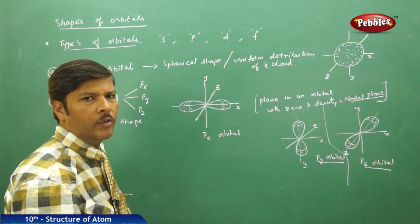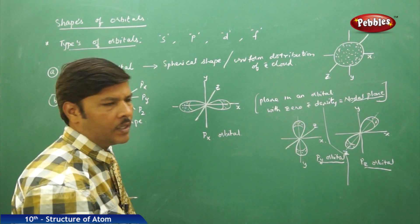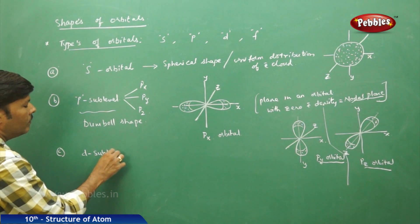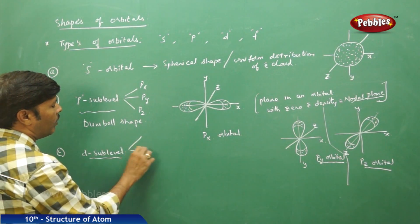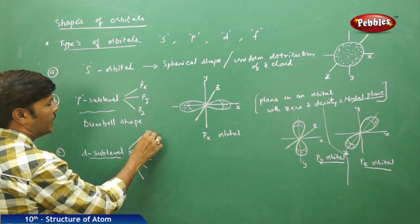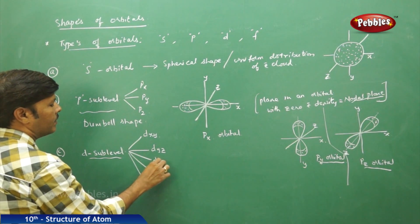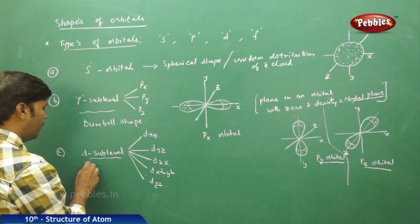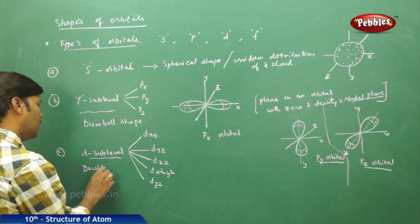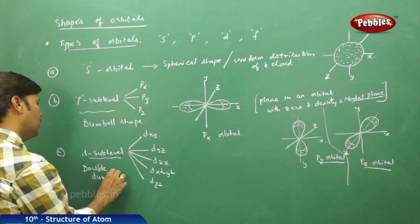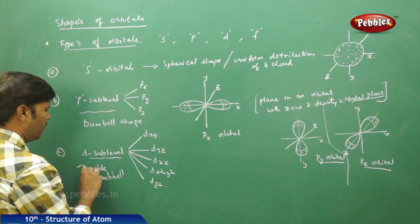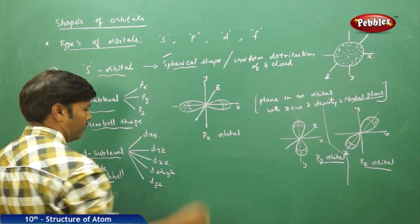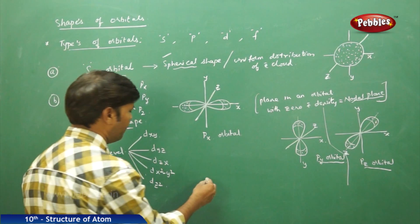These are the three different dumbbell-shaped structures — the shapes of the p orbital. Moving on to the d sublevel: it has five orbitals altogether — dxy, dyz, dzx, dx²-y², and dz². The shape of the d orbital is a double dumbbell, while the p orbital is a dumbbell and the s orbital is spherical.